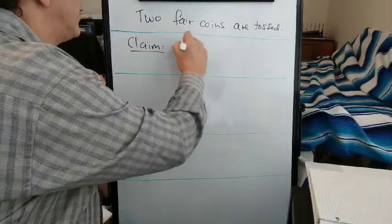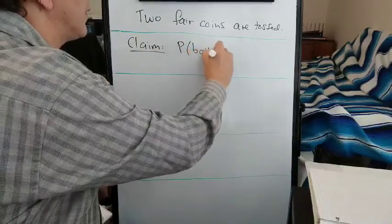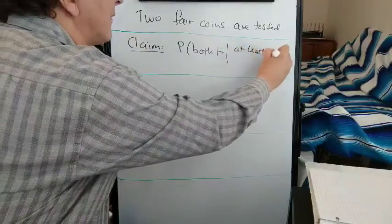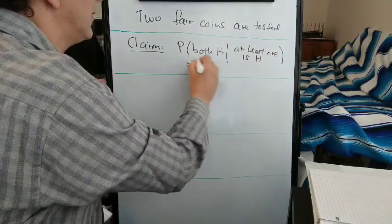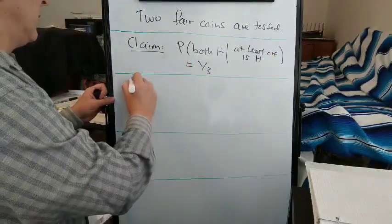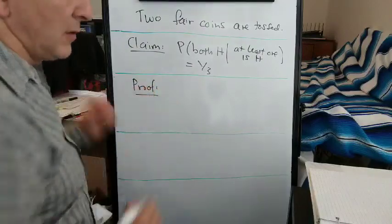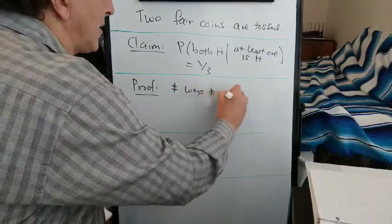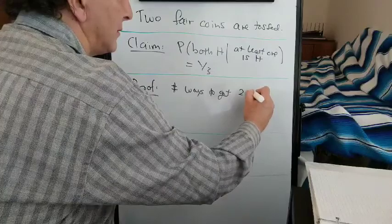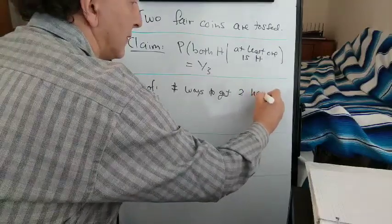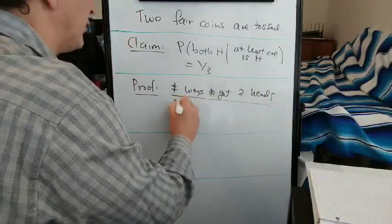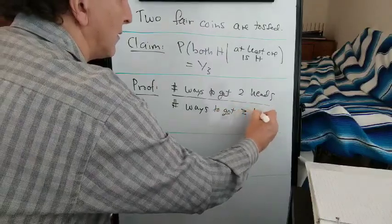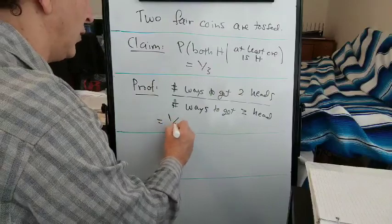I claim that the probability that both are heads, given that at least one is heads, is one-third. The reason is that the number of ways to get two heads over the number of ways to get at least one head is one over three.